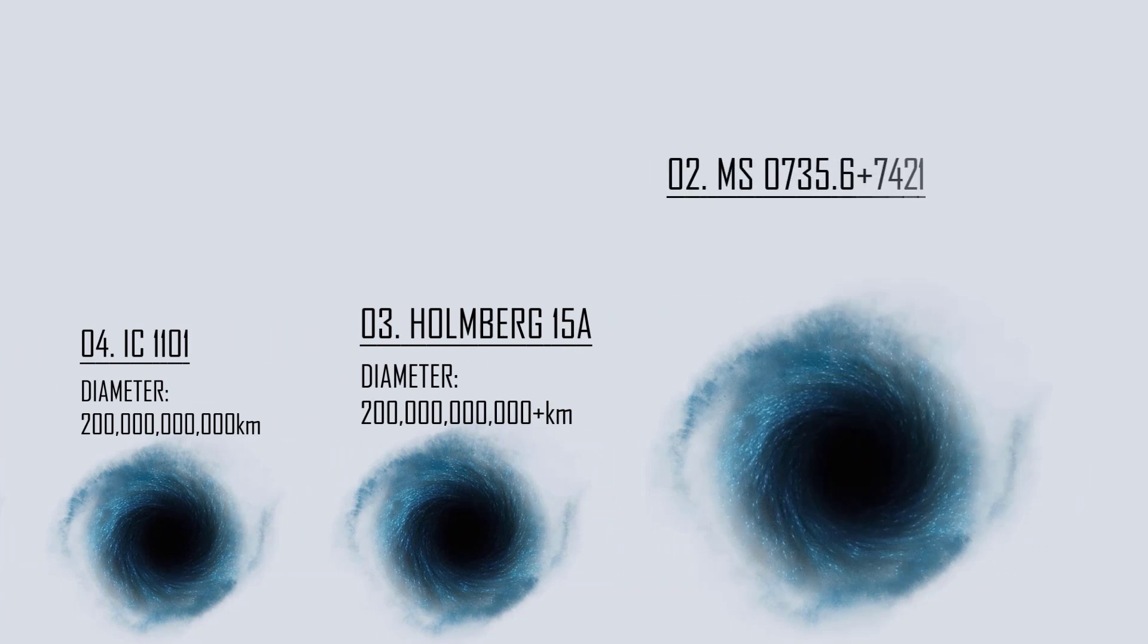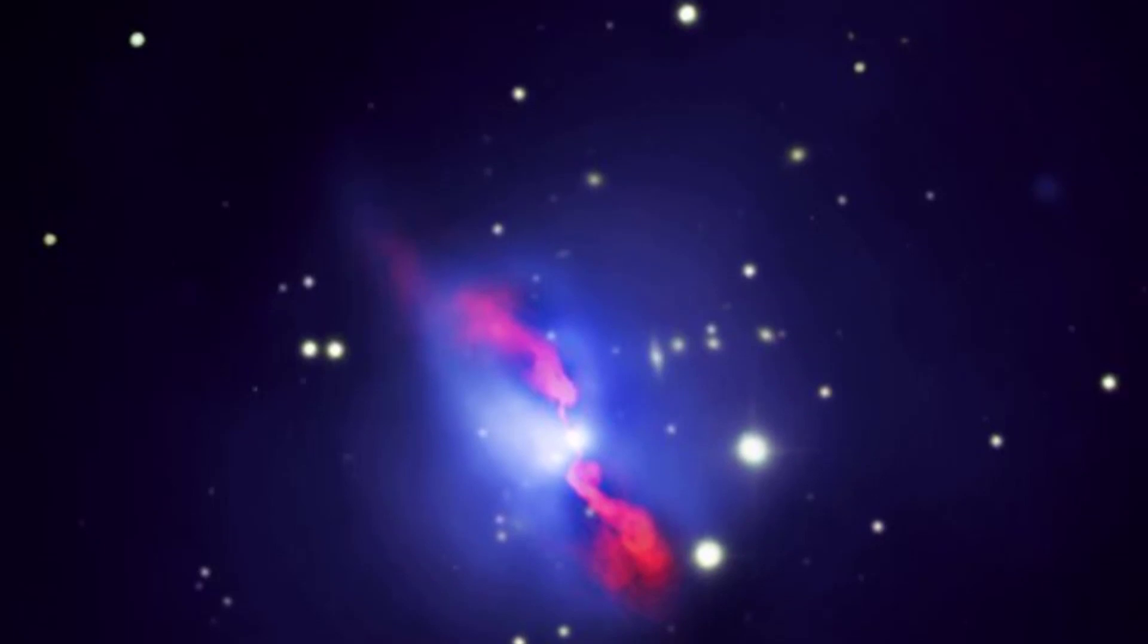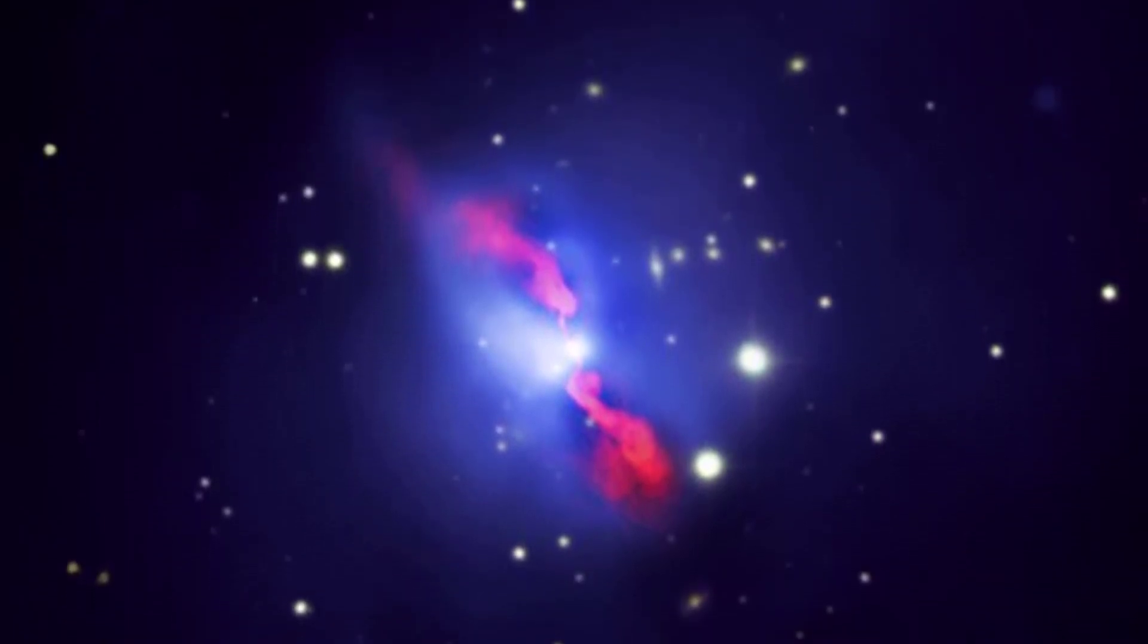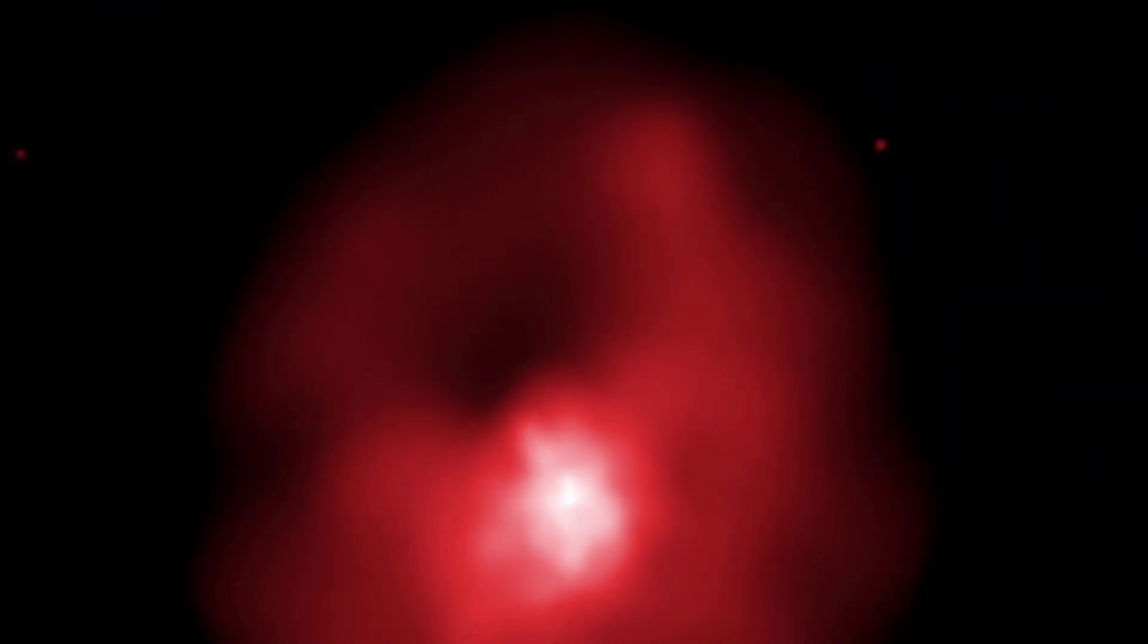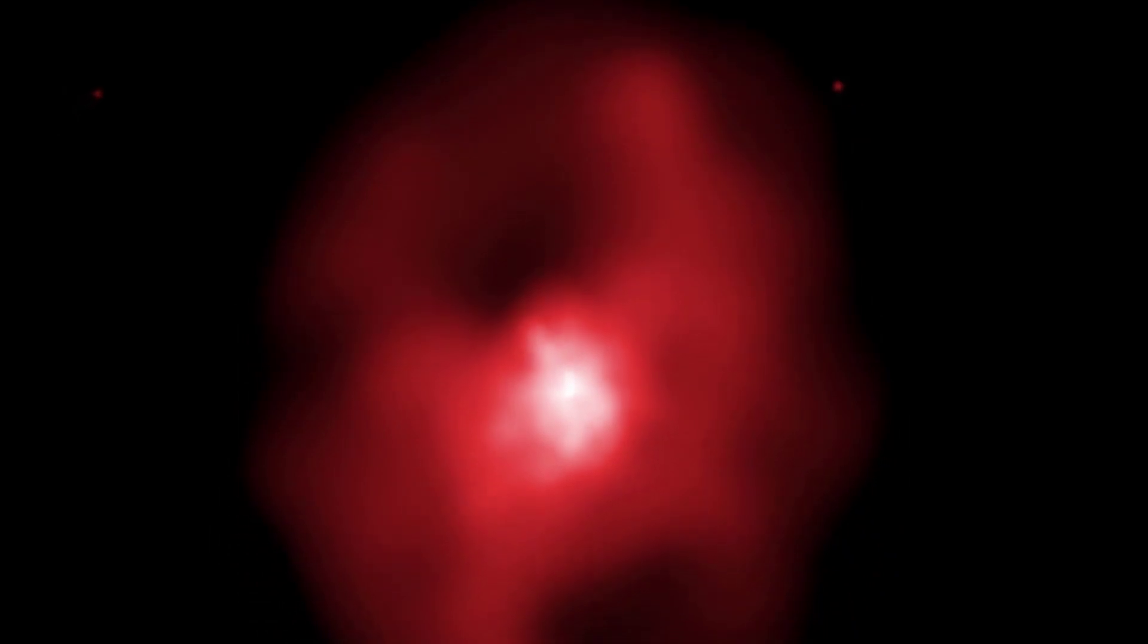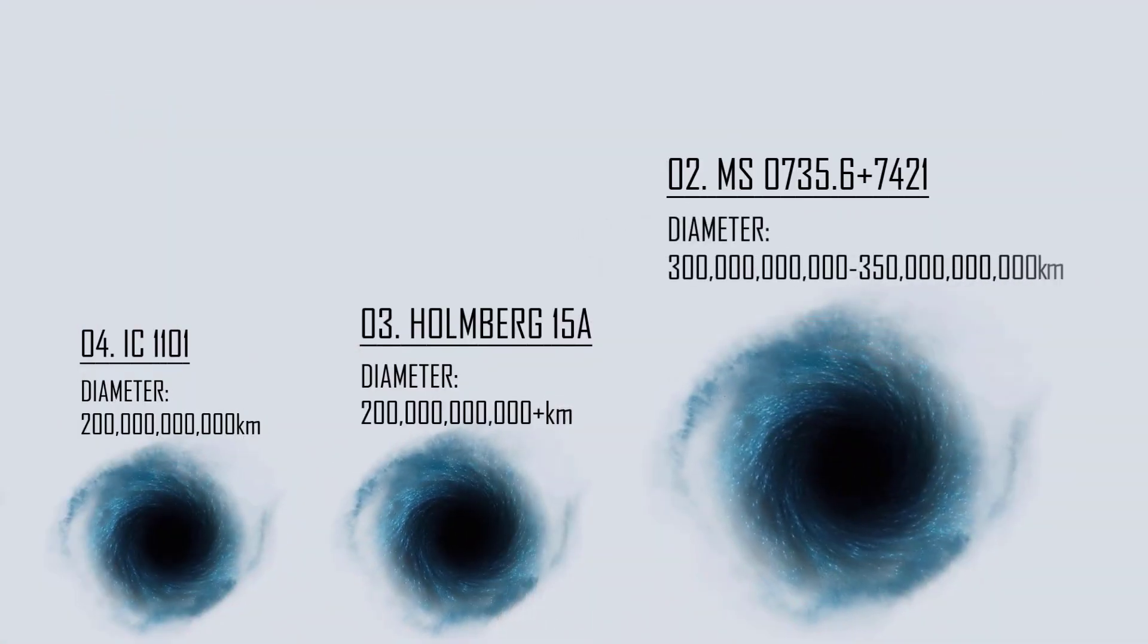Number 2: MS 0735.6+7421. This is a cluster of galaxies located in the constellation Camelopardalis, approximately 2.6 billion light-years away. It is notable as the location of one of the largest central galactic black holes in the known universe, which has also produced one of the most powerful active galactic nucleus eruptions. The ultra-massive black hole has a mass of around 51.3 billion solar masses. Its diameter is 30 to 35 times Pluto's orbit, or around 300 to 350 billion kilometers.